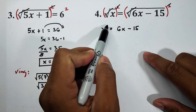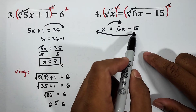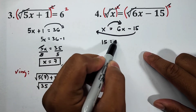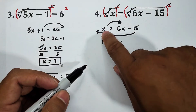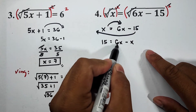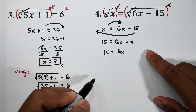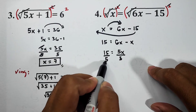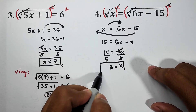We can transpose 6x to the other side, but what will happen is that x would become negative. So instead I will transpose x to the right side and negative 15 to the left side, so negative 15 becomes positive 15. We have 15 is equal to 6x minus x, which simplifies to 5x is equal to 15. Dividing both sides by 5, x is equal to 3. This is the value of x in number four.